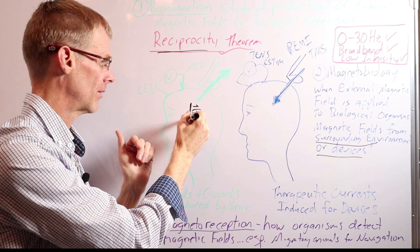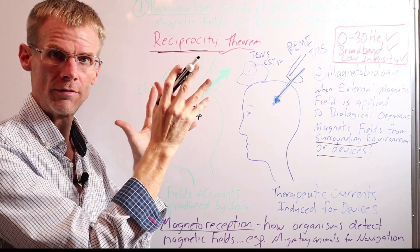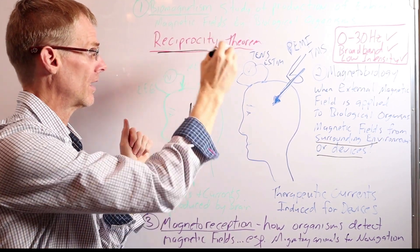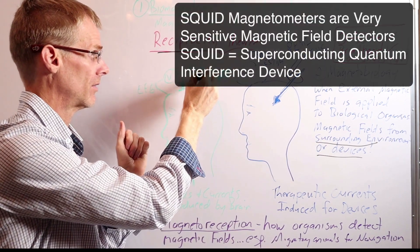So the net current in the brain, the net vector, if you kind of take all the vector sums of all the currents, is going to create an external magnetic field that a squid magnetometer can detect.